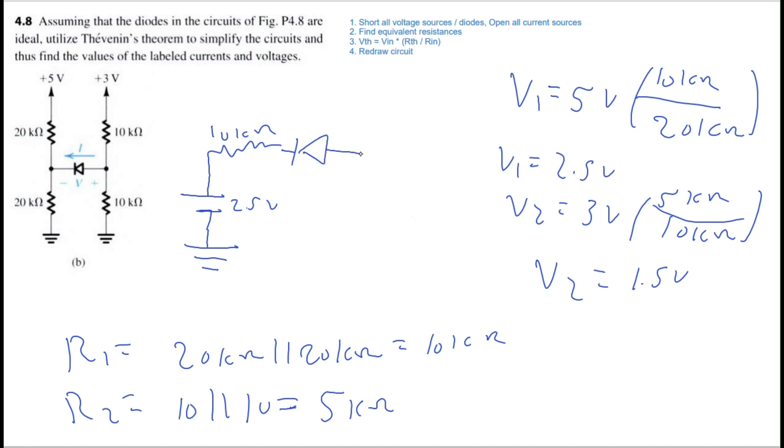Then we have our other Thevenin resistance, 5 kilo ohms, then we have our second voltage source, 1.5 volts, and then ground. And now as you can probably see, this is going to be a lot easier to analyze.